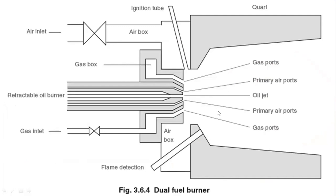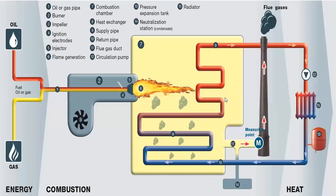This is a dual fuel burner: you have a retractable oil burner where oil is coming in and gas is coming through the annulus. The entire thing is a circular cross-section with oil and gas coming through, plus an ignition tube and flame detection mechanism. Air is coming through the air box, and you have oil jet primary air ports and gas ports. Continuous combustion takes place in this dual fuel burner.